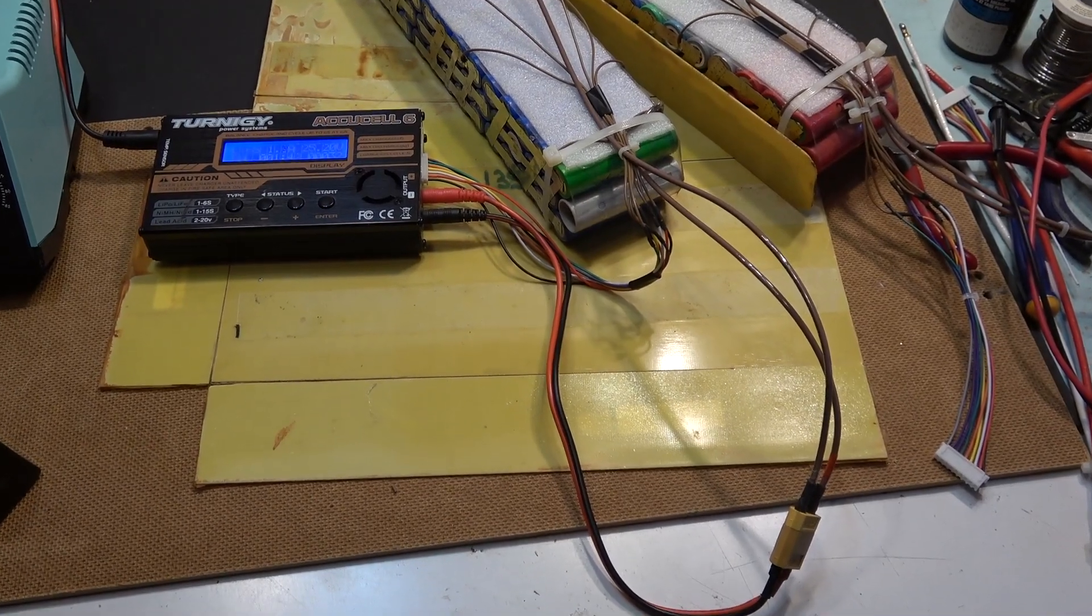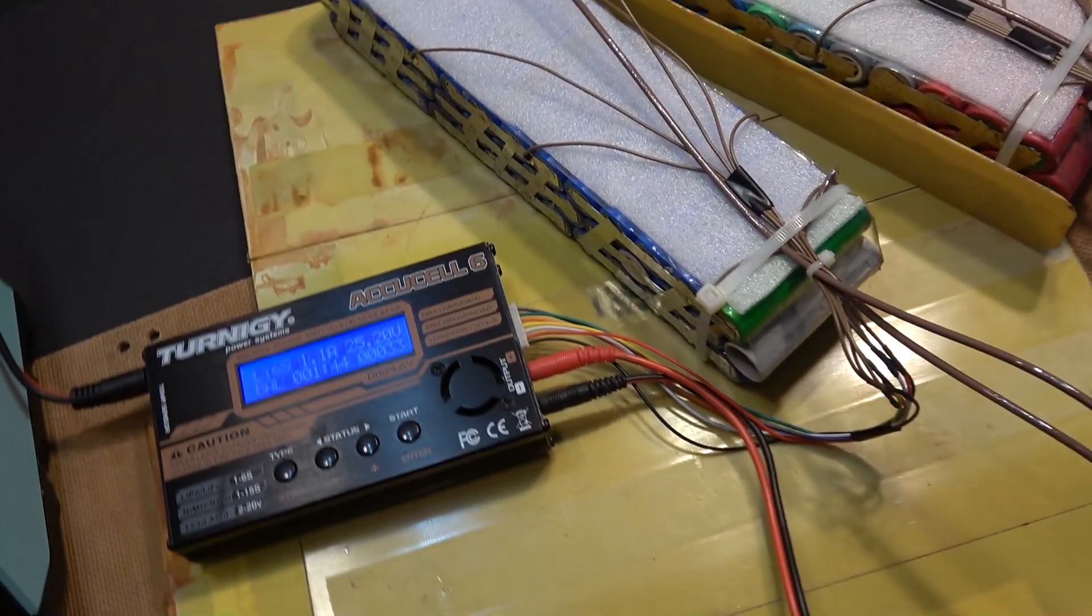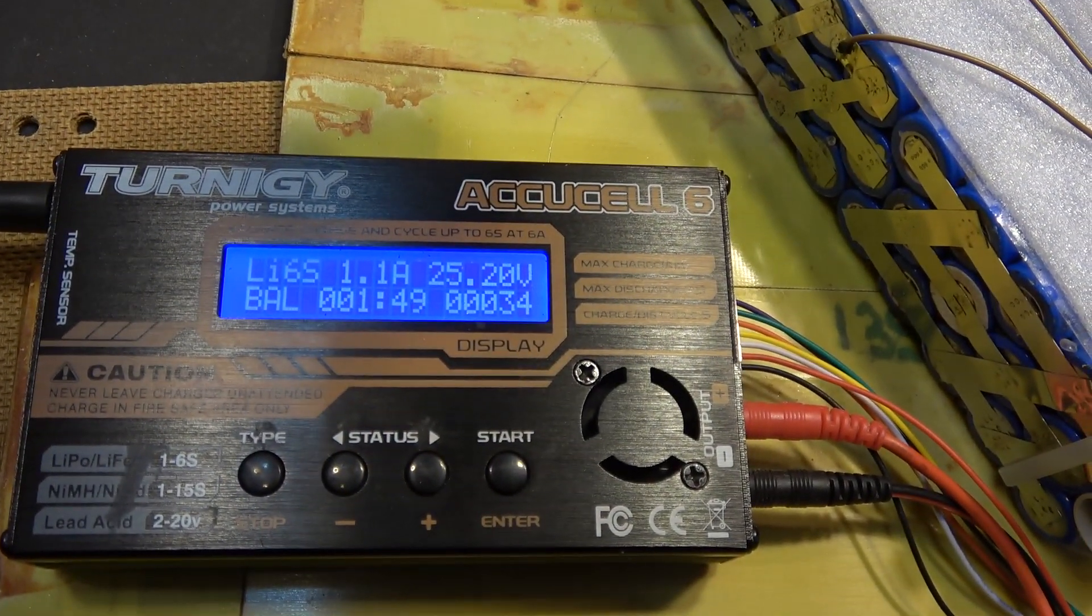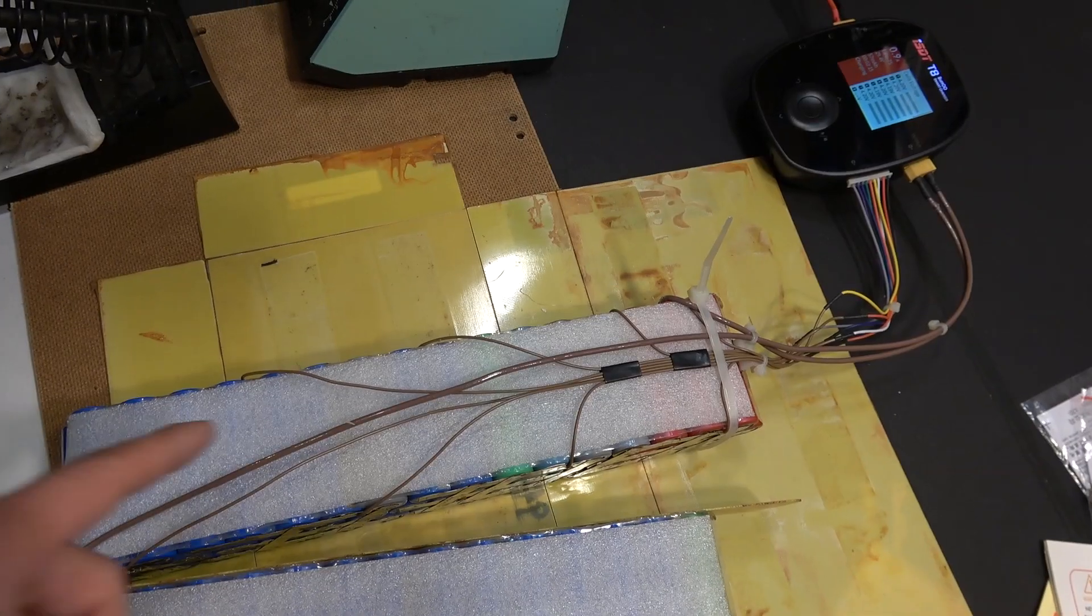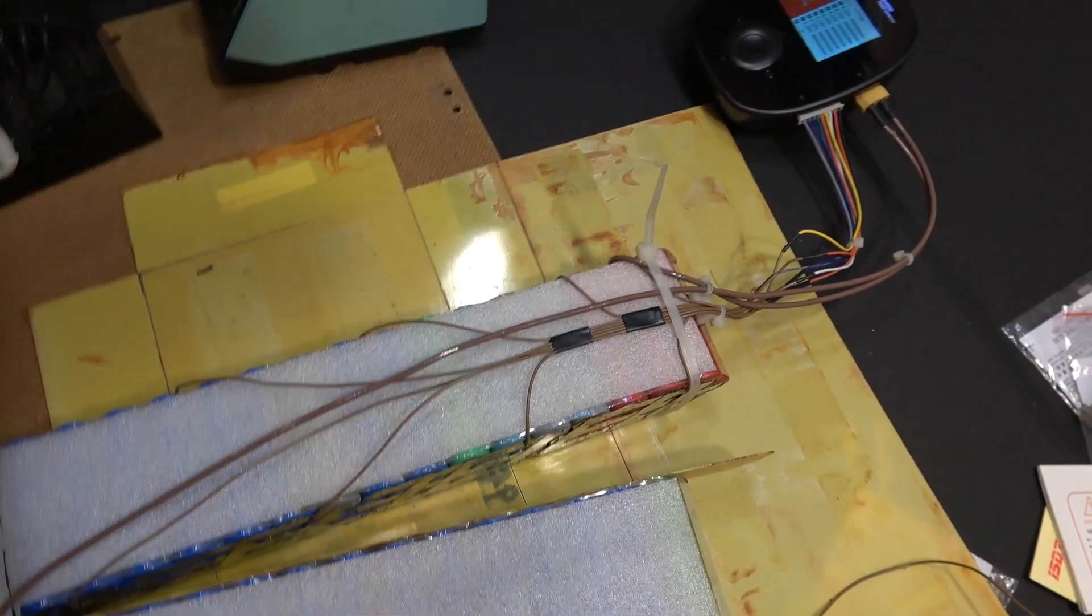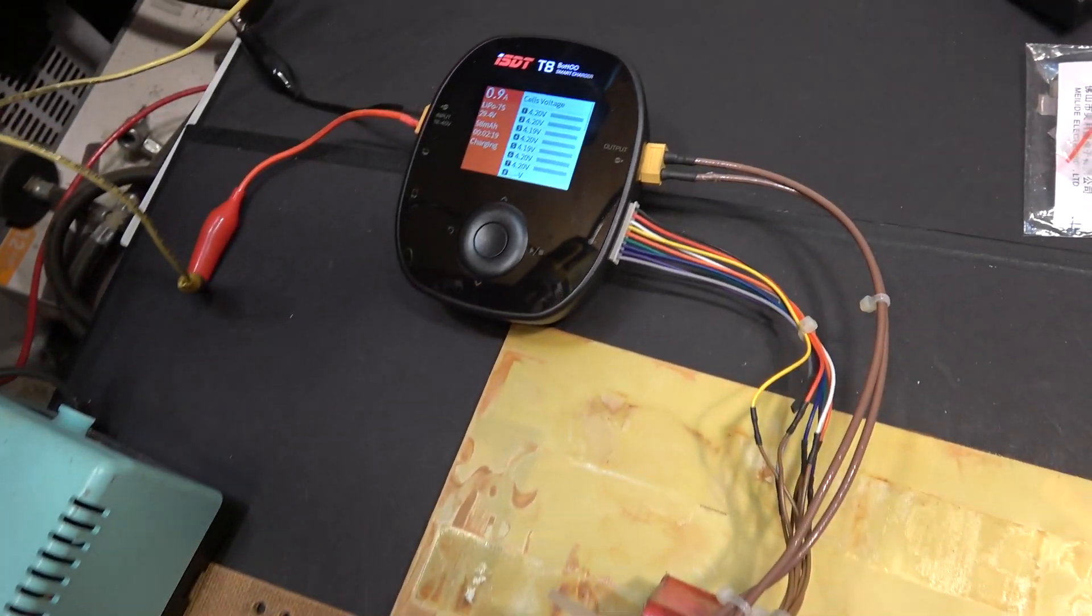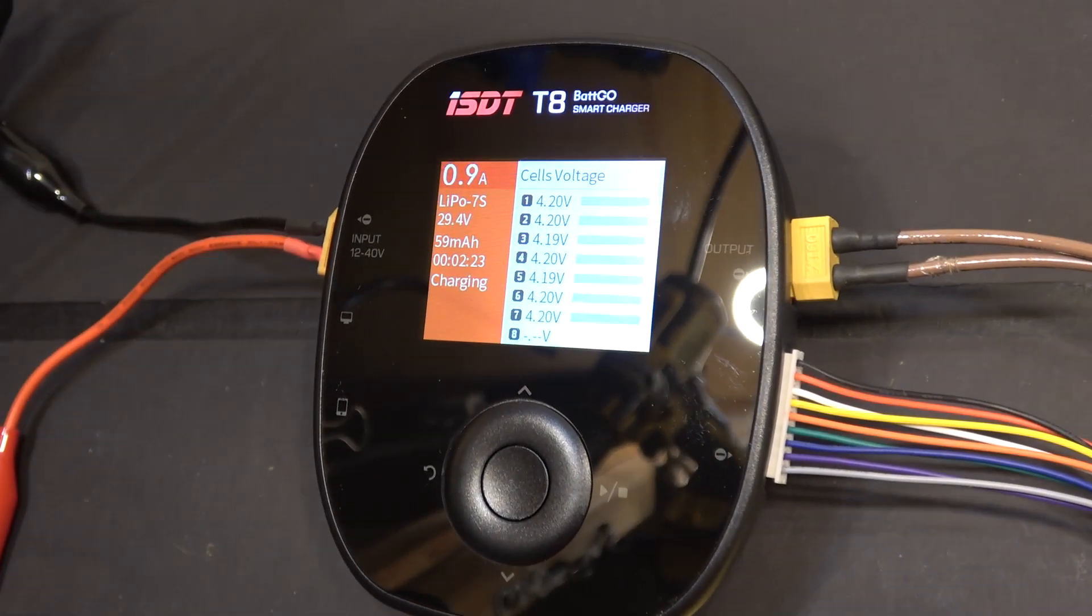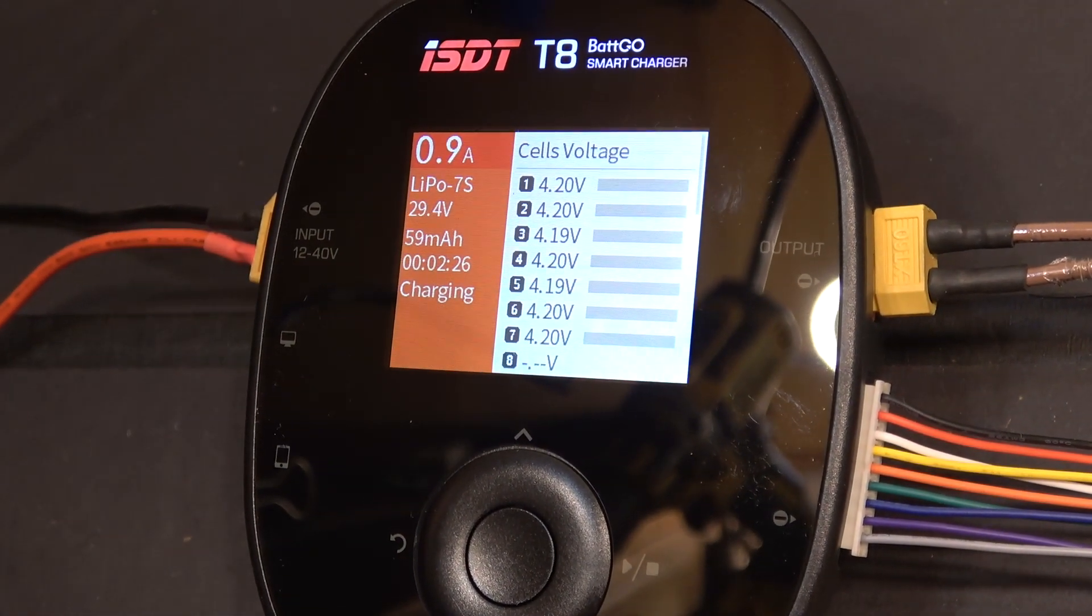So here is my balance charger, charging my 6S battery pack at about 1A. So here is my 7S pack, it's being charged by my balance charger, charging at 1A right now and it works great. So here is my 8S pack.